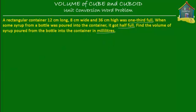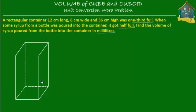So let's see what we have. We have a rectangular container — rectangular means a cuboid — something like this. I've drawn the outline. So the container has length 12 cm, width 8 cm, and height 36 cm, which means from here to here is 36 cm.